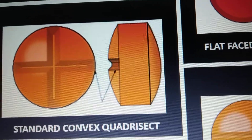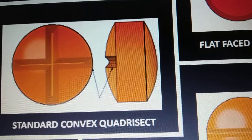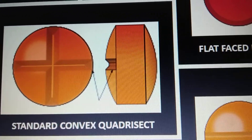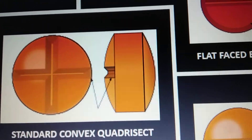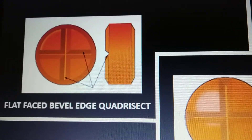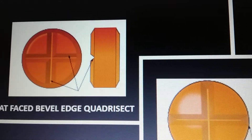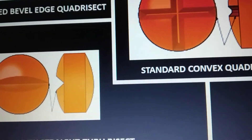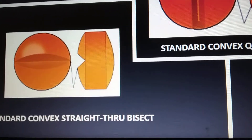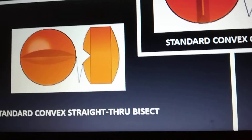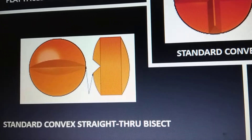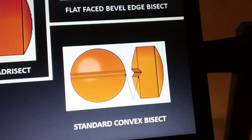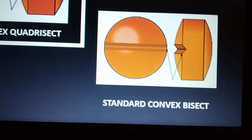Next is the standard convex quadricep tablet — the basic tablet shape is standard convex in nature, and when such a tablet has two break lines, the tablet is called a quadricep tablet. Similarly, when there are two break lines and the basic shape is flat face bevel edge, it is called a flat face bevel edge quadricep tablet. Here you can see the difference in the nature of the break line — the break line is very deep in nature, and therefore the description of such a tablet is standard convex straight through bisect. Then there is the standard convex bisect tablet, which is very simple.